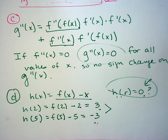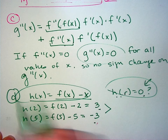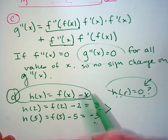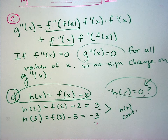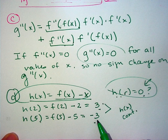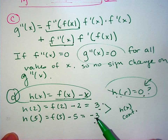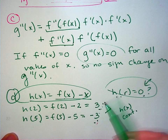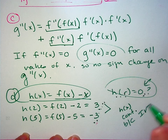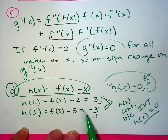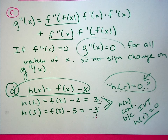The Intermediate Value Theorem requires the function to be continuous. Since h(x) is a composition of f and x, and f is continuous, h is also continuous. Because h(2) = 3 and h(5) = −3, the IVT guarantees h hits every y-value in between — including 0. Therefore h(r) = 0 for some r between 2 and 5. Your supporting work is showing h(2) and h(5).